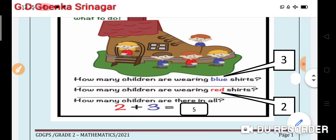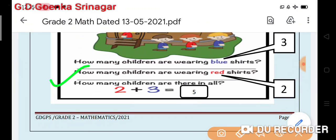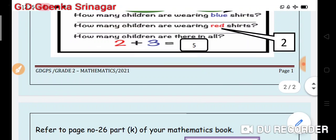Alright my dear little Goinkans. Now, how many children are there in all? So, 3 plus 2 is equal to 5. Alright my dear little Goinkans.